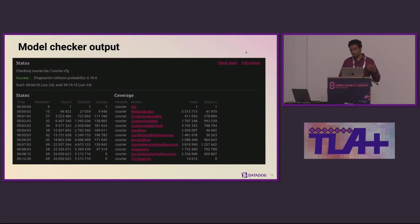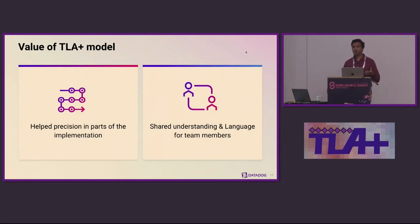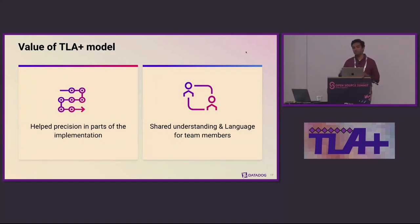Here's what a successful output looked like. In this case, TLC scanned over 5 million distinct states and found no scenarios where our properties were violated. This was obviously a good result — significantly higher than what my team and I could have reasoned through collectively. In addition, I found it valuable in a couple of other ways: it provided a shared understanding of the system and a common language for communicating properties, and when I started implementing the system, it forced me to be more precise.